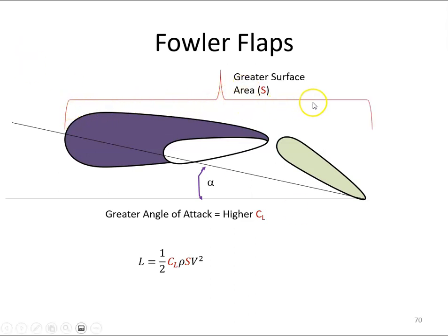As it extends back, it increases the surface area S and increases the angle of attack α. The lift produced is greater because we have an increase in coefficient of lift and an increase in area. The Fowler flap is an improvement on the slotted flap, which is an improvement on the split flap, which is an improvement on the plain flap.